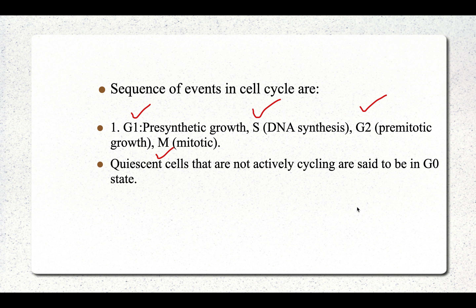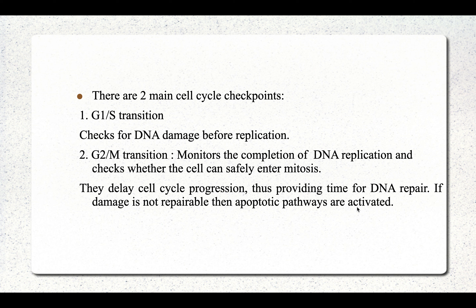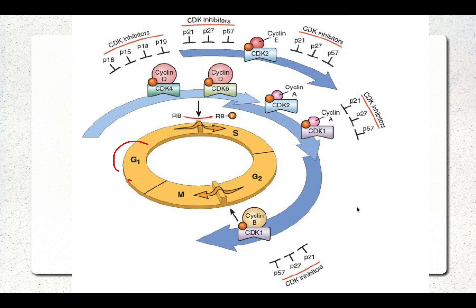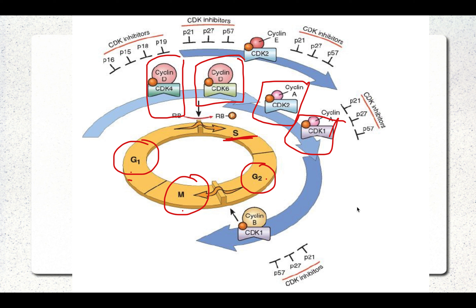The cell cycle consists of G1 (pre-synthetic growth phase), S (DNA synthesis), G2 (pre-mitotic phase), and M (mitotic phase). Cells not in the cycle are in the G0 quiescent state. There are two important checkpoints: G1 to S phase and G2 to M phase. Cyclins and CDKs act as activators pushing the cell through the cycle — these are oncogenes. CDK inhibitors inhibit these genes and are mostly tumor suppressor genes.